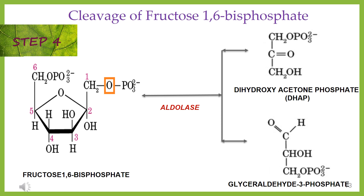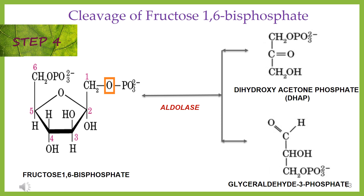Step 4: cleavage of fructose-1,6-bisphosphate. The enzyme aldolase converts fructose-1,6-bisphosphate into glyceraldehyde-3-phosphate and dihydroxyacetone phosphate. Both are isomers of each other.